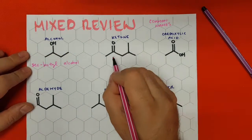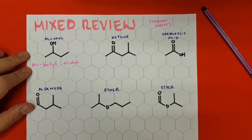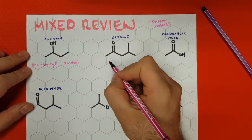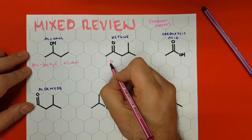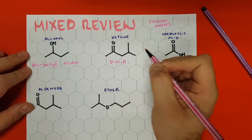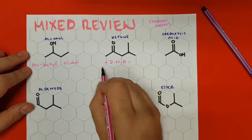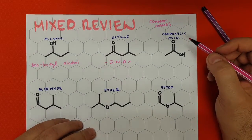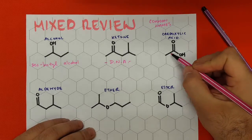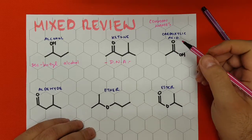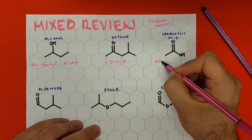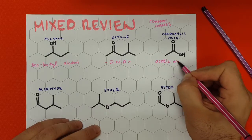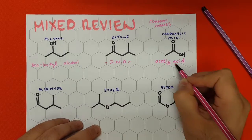Next, ketones. Ketones are rarely named with common names, so for the purposes of this review, we're going to say that the common name does not apply. For carboxylic acids, we use their original nomenclature. We see that they have two carbon atoms, and that's going to turn into 'acet.' The ending for carboxylic acids in common nomenclature is '-ic acid.' So we get acetic acid.